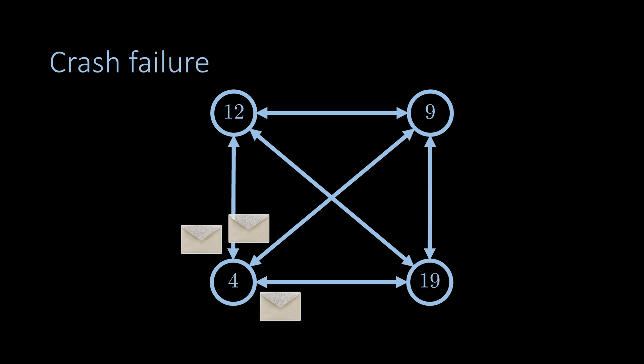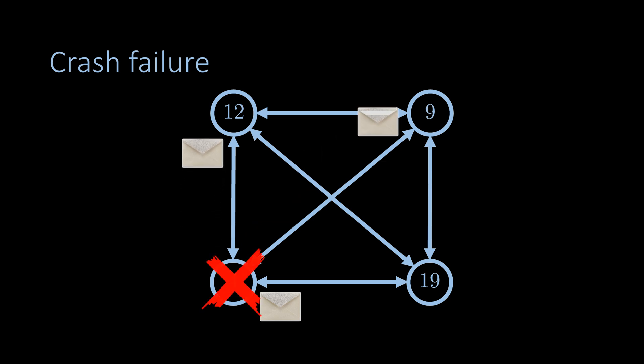Crash failures can cause inconsistencies in the local views of the nodes. In the example here, the node in the lower left crashed before sending the third message to the node in the lower right. So, consensus must be reached with a partial view of the system state.